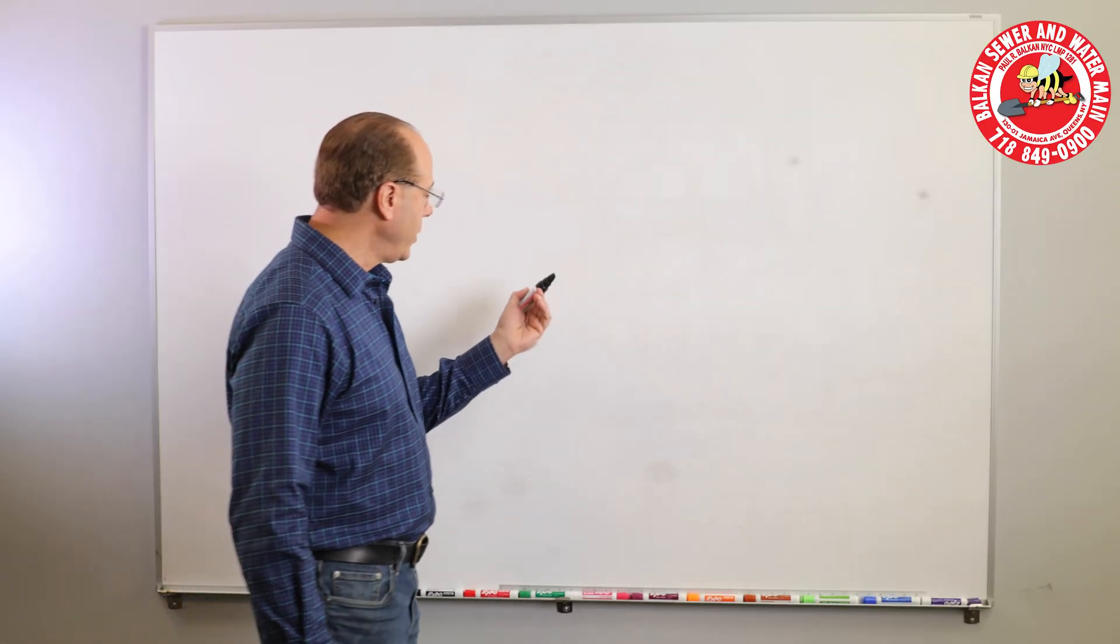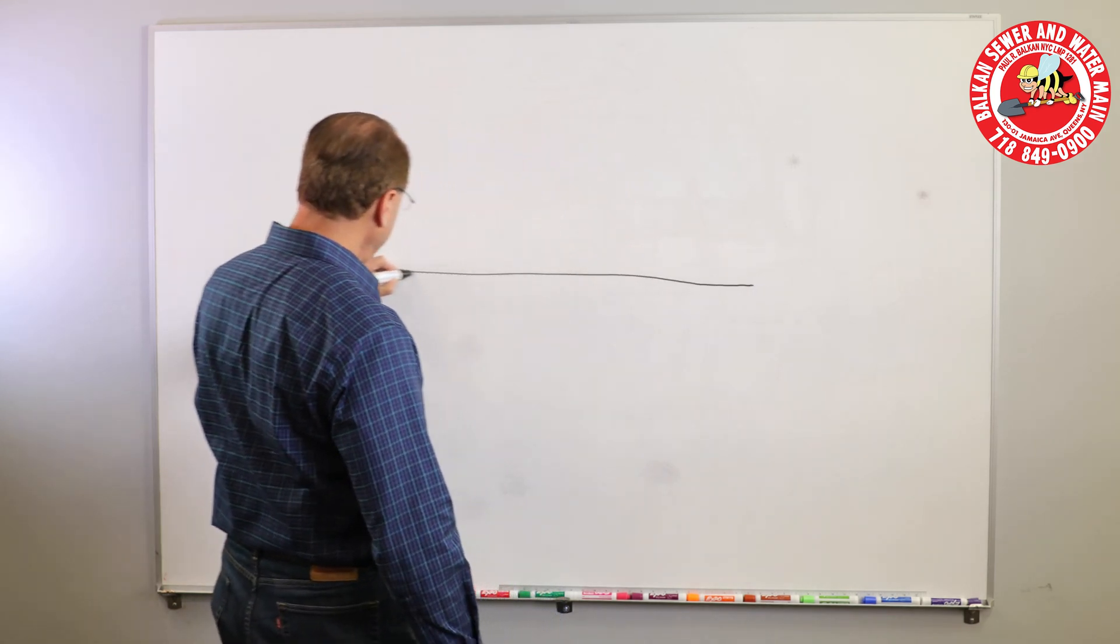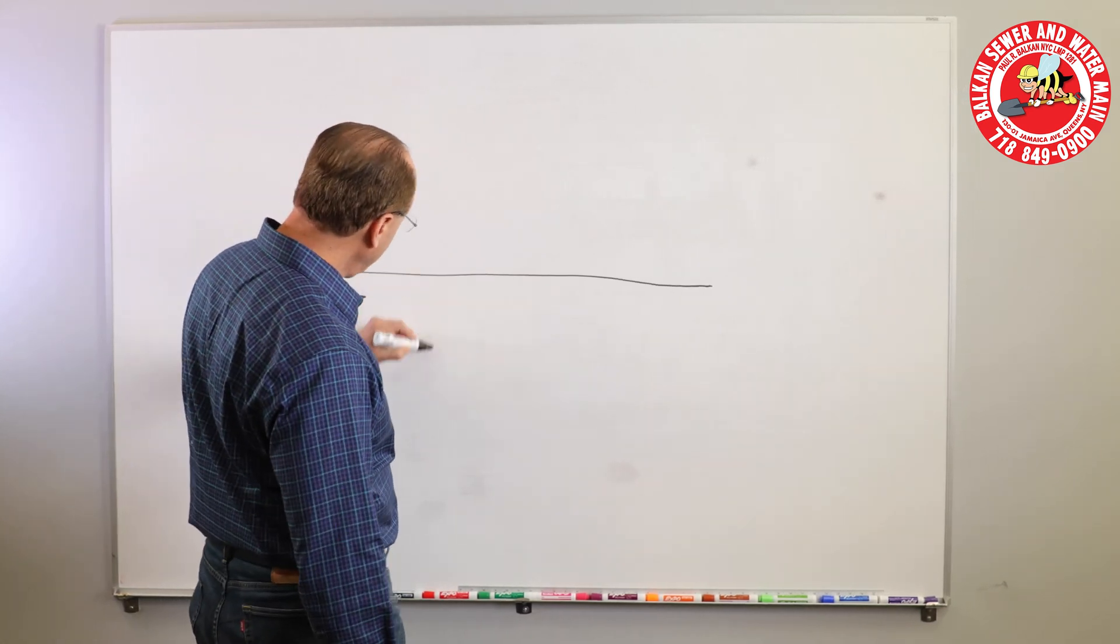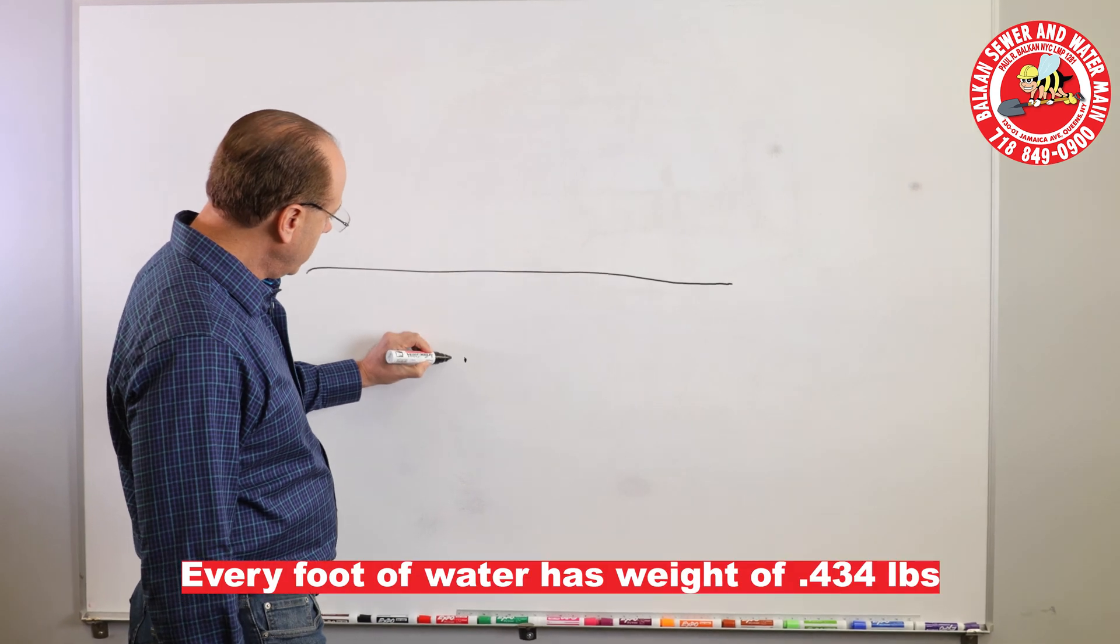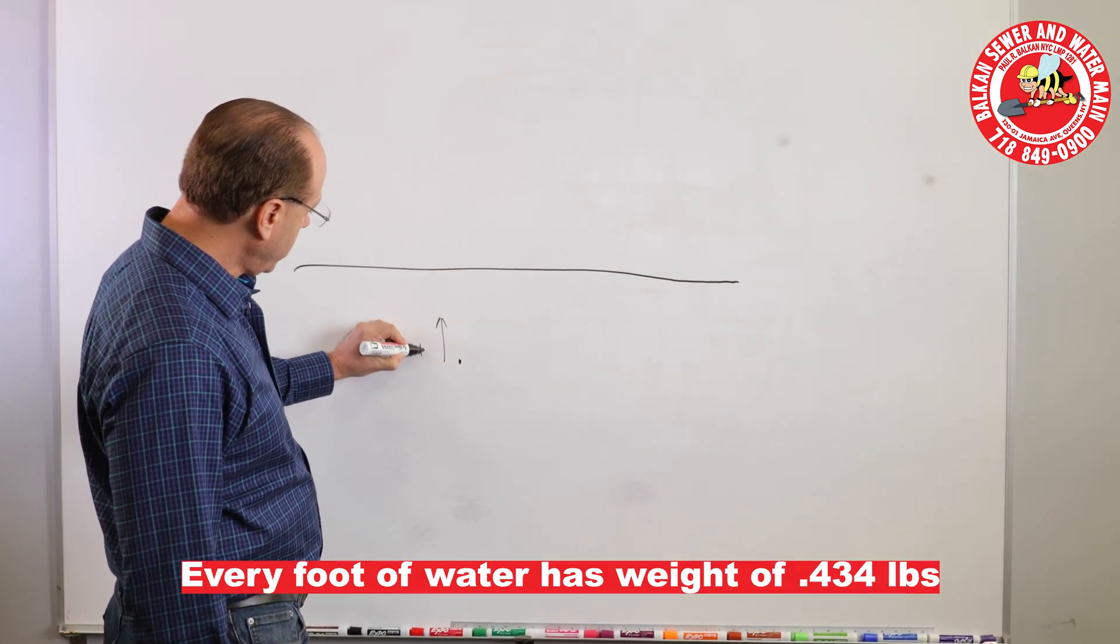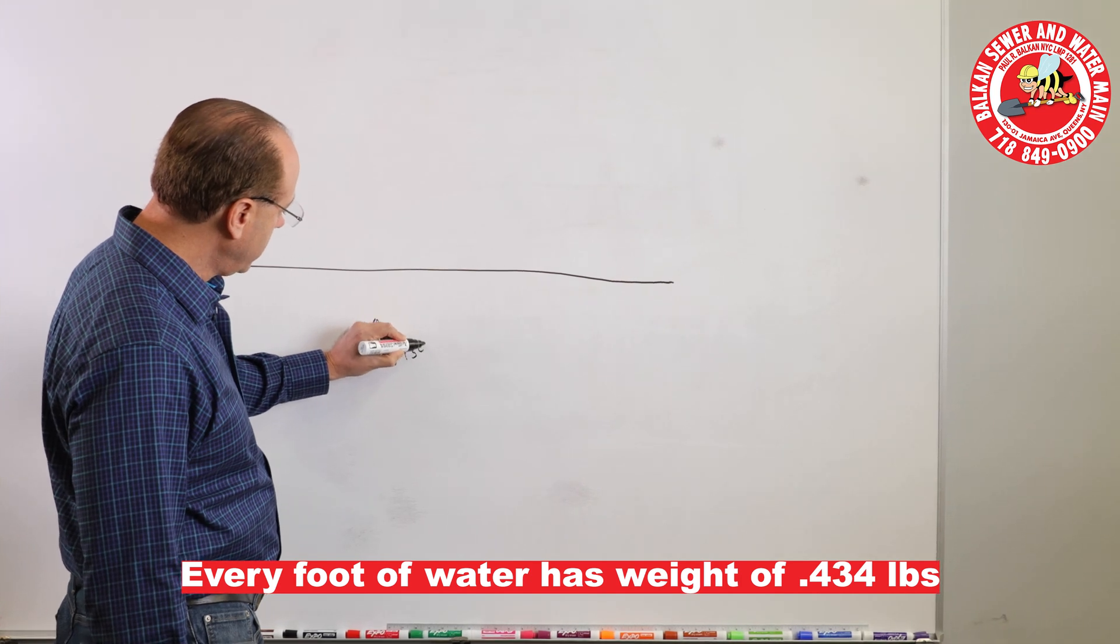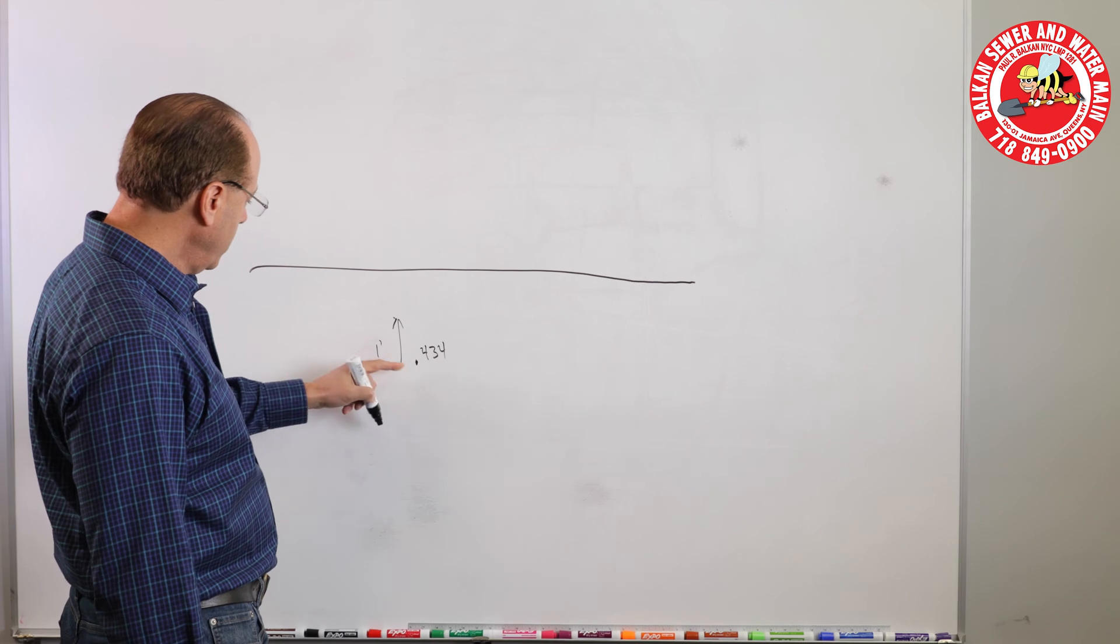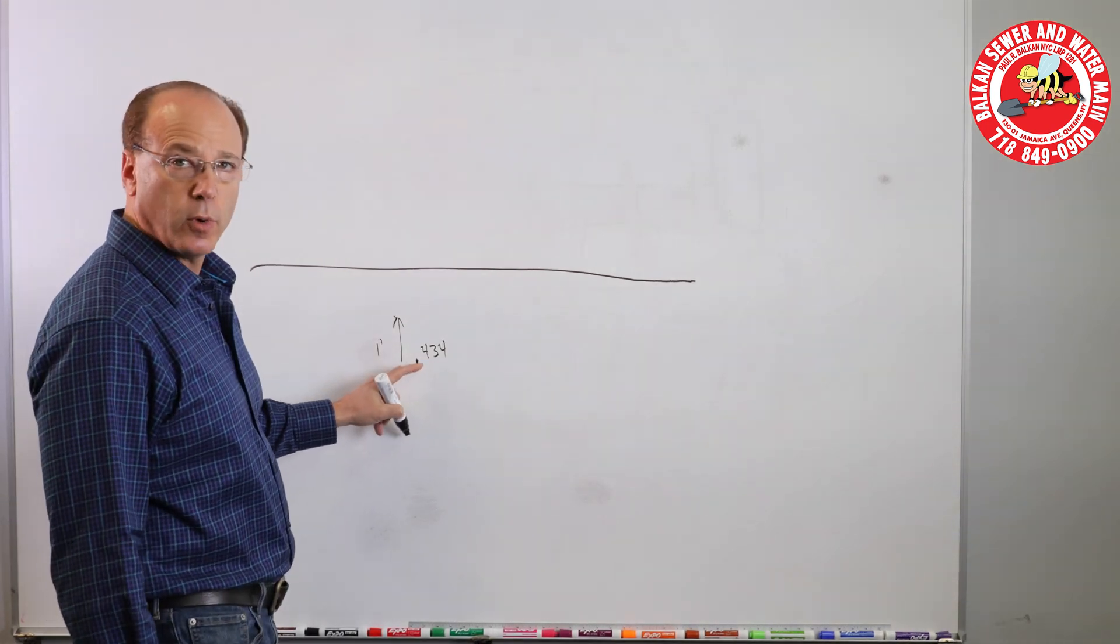Okay so here we are in the Balkin classroom. I'm going to make this concise and simple. Let's say that's ground level. Key number: every foot of water has a weight of 0.434 pounds. For every foot of water you get a PSI of 0.434 pounds.